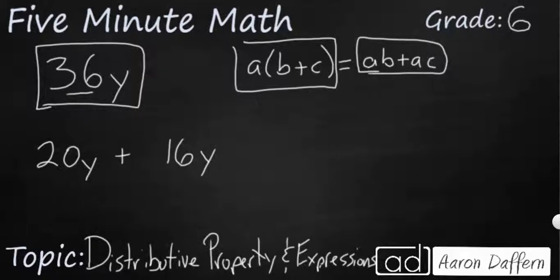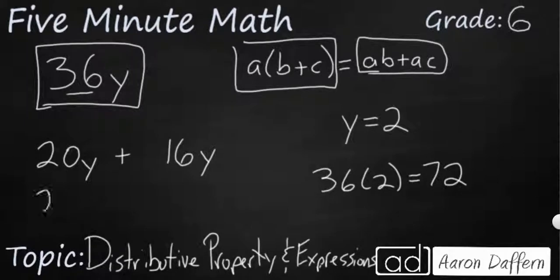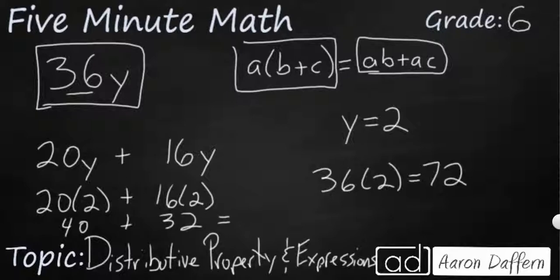Well, double check. Let's just substitute in a number for y. Let's say y equals two. Well, if we've got 36y, that would be 36 times two. So that's going to be 72. But if we want to say y is two here, it will be 20 times two plus 16 times two, and that's going to be 40 plus 32, which equals 72. So the distributive property can be used in either direction.